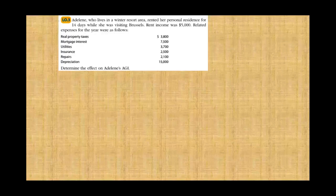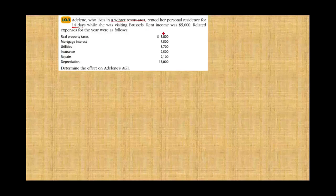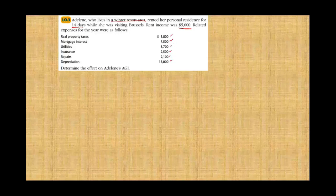So we have Adlin, who lives in a winter resort area, and rented her personal residence for 14 days while she was visiting Brussels. Rent income was $5,000, and related expenses were as follows: she incurred $3,800 of real property taxes, mortgage interest, utilities, insurance, repairs, and depreciation. Determine the effect on Adlin's AGI.